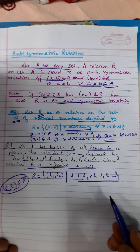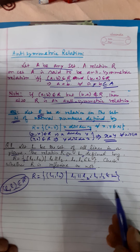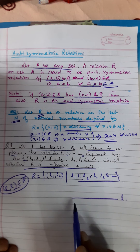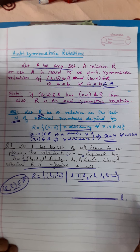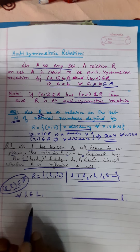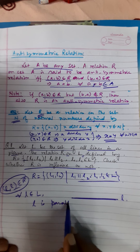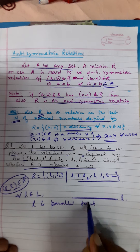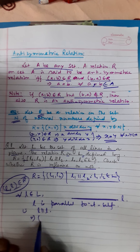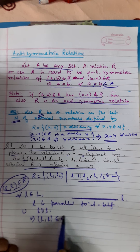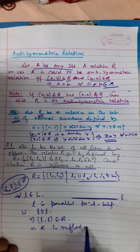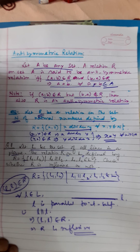The condition is L1 is parallel to L2. Each and every line is parallel to itself, or coincides with itself. So for all L belonging to L, L is parallel to itself — that is, L is parallel to L. It implies L comma L belongs to R. Therefore, R is reflexive.